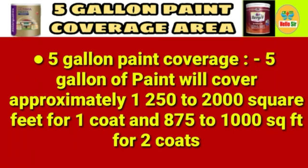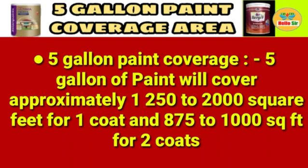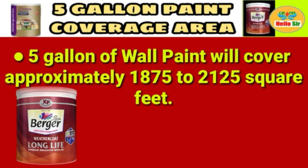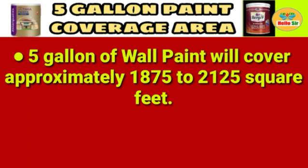For 5 gallon paint coverage: 1 gallon of paint will cover approximately 1,250 to 2,000 square feet for one coat and 875 to 1,000 square feet for two coats. And 5 gallons of wall paint will cover approximately 1,875 to 2,125 square feet.